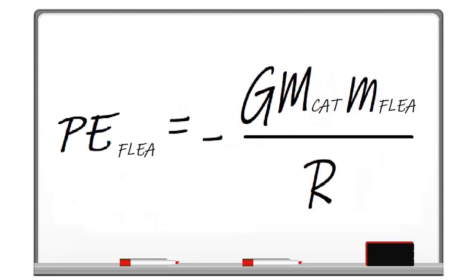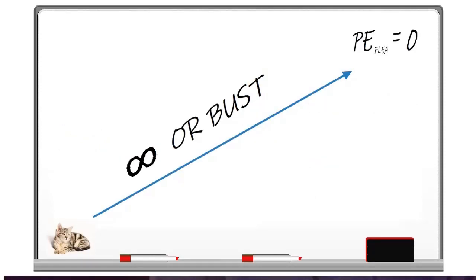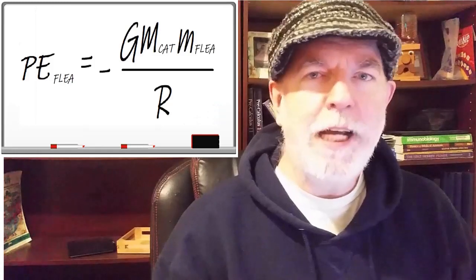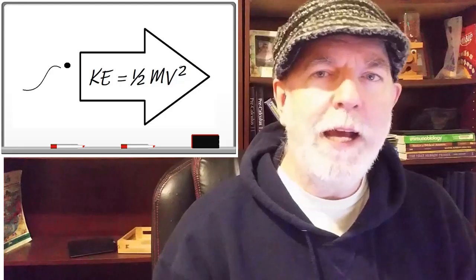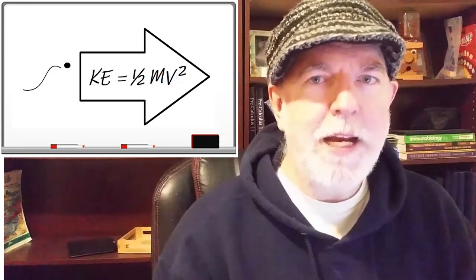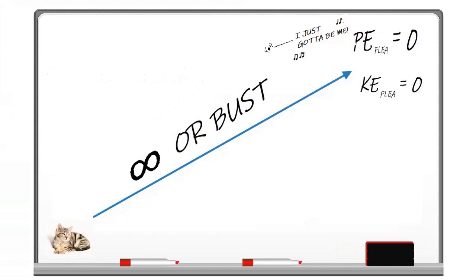The flea also has a gravitational potential energy. The potential energy is maximized to 0 as the distance from the center of the cat increases toward infinity. Everywhere else, this energy has a negative value. The flea also has an energy due to its motion — kinetic energy. At the idealized infinite distance from the cat, its motion, and therefore its kinetic energy, is 0. Thus, the total energy is 0.